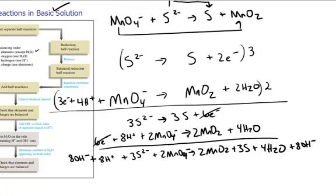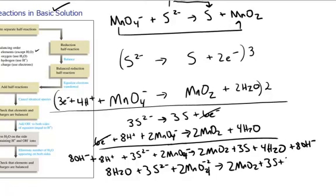So eight hydroxide. When I add eight hydroxide to eight protons, I make eight water. Plus the sulfide, plus the permanganate gives the manganese oxide, plus the sulfur, plus the water, plus the hydroxide.